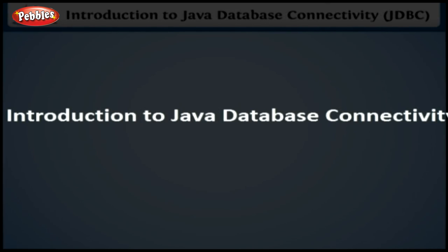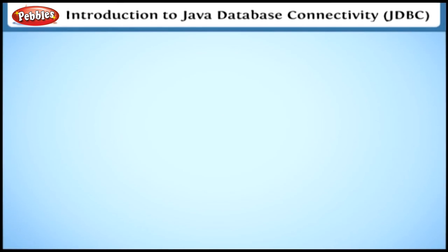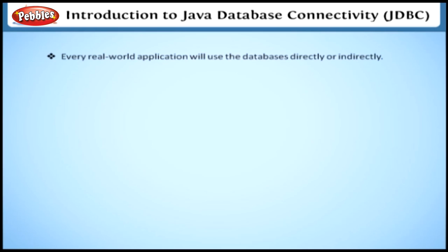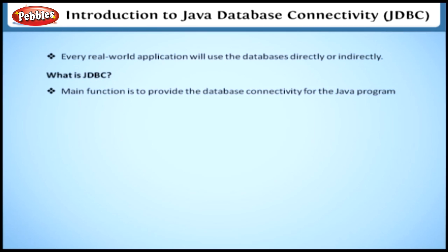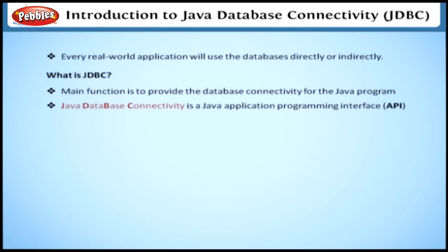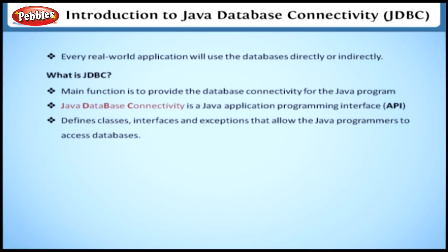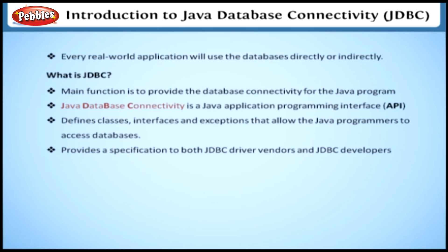Introduction to Java Database Connectivity — JDBC. Databases are widely used for business nowadays, and every real-world application will use databases directly or indirectly. JDBC's main function is to provide database connectivity for Java programs. Java Database Connectivity is a Java application programming interface that defines classes, interfaces, and exceptions that allow Java programmers to access databases. It provides a specification to both JDBC driver vendors and JDBC developers.